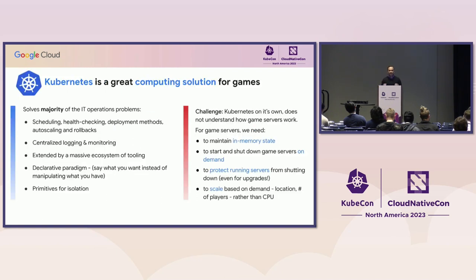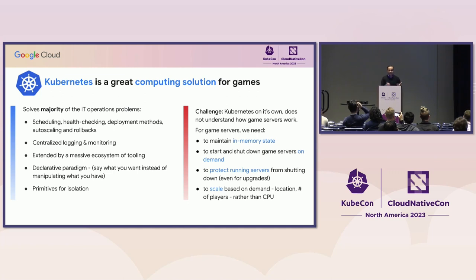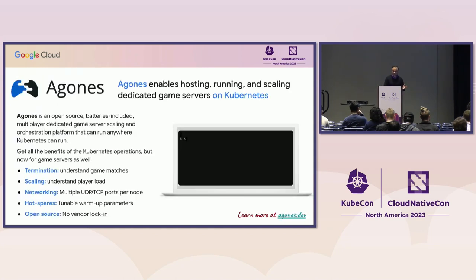Before we dive deeper into living games, let's briefly discuss how Kubernetes is a great compute solution for games. Kubernetes solves a majority of IT operations problems — scheduling, auto-scaling, health checking, logging and monitoring, declarative paradigms, rollbacks, isolation, etc. However, Kubernetes on its own doesn't understand game servers. For game servers, we really need the ability to start and shut down on demand, protect game servers running with players on them — allocated game servers cannot just be shut down even for upgrades — and scale on demand based on location and number of players rather than CPU utilization.